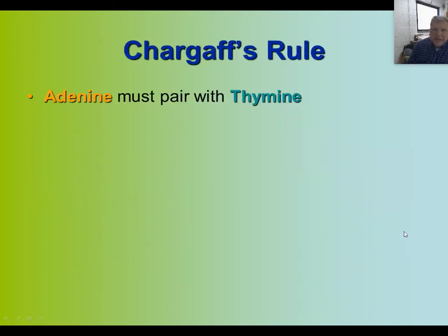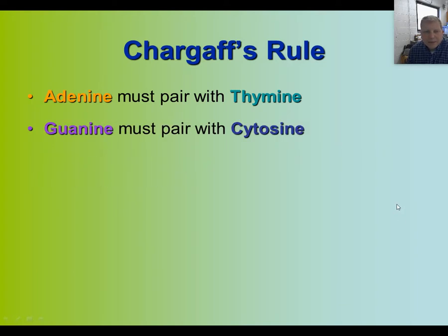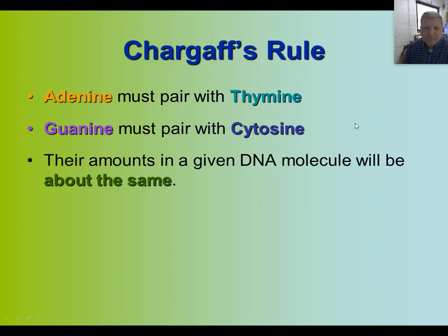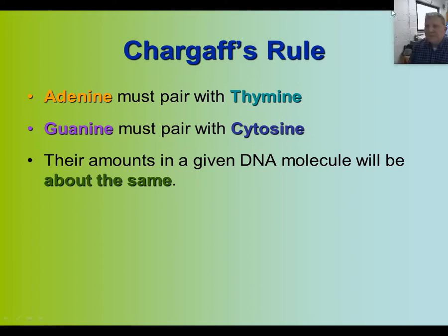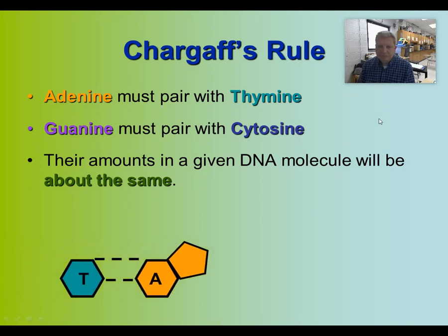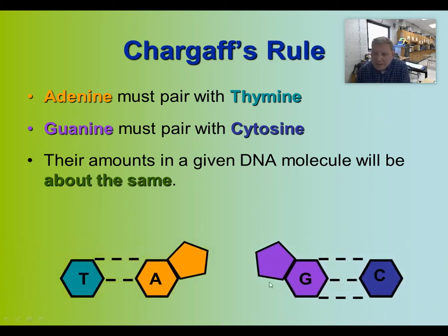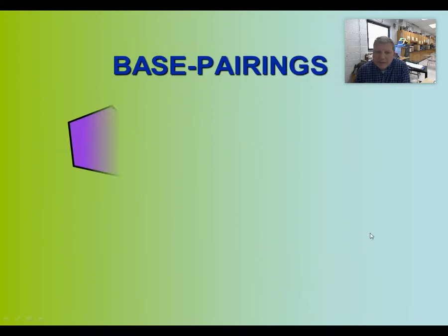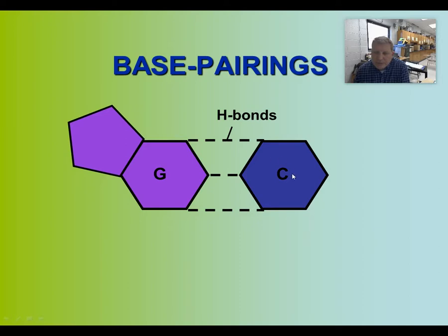Chargaff's rule: adenine must pair with thymine, and guanine must pair with cytosine — so A-T and G-C. Their amounts in a given DNA molecule will be about the same. For example, if you have 20 adenine, you would have 20 thymine; if you have 30 guanine, you'd have 30 cytosine. The base pairs between C and G, and A and T, are hydrogen bonds, so they are relatively weak bonds.